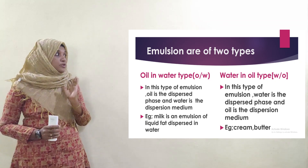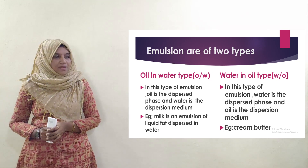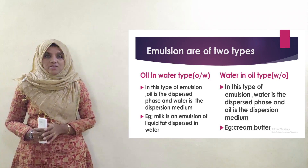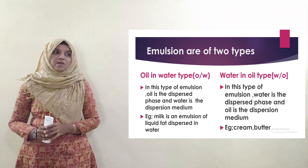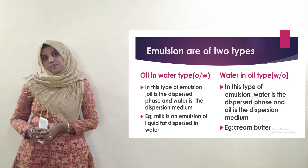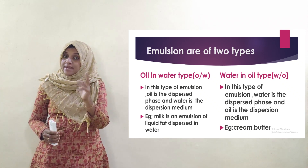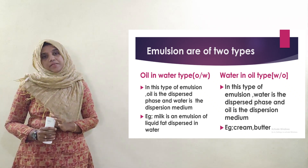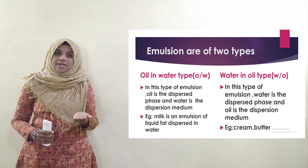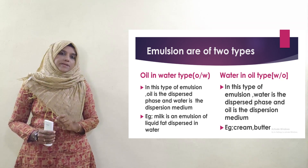Emulsions are of two types: oil-in-water type and water-in-oil type. These are the two types of emulsion.